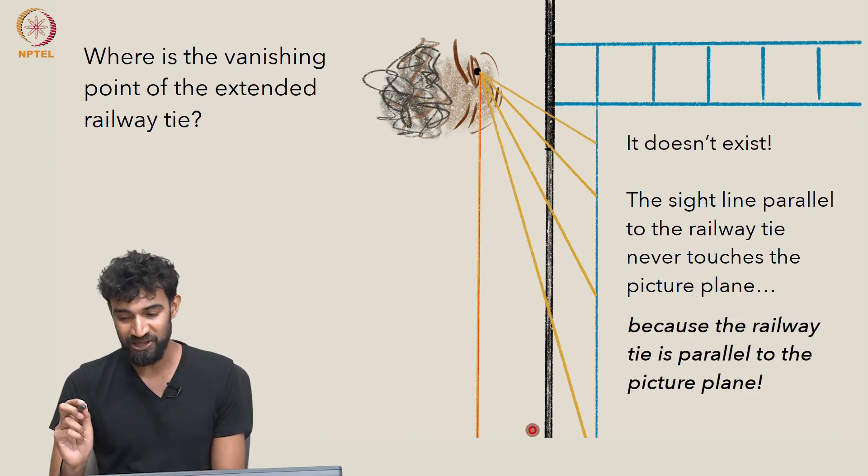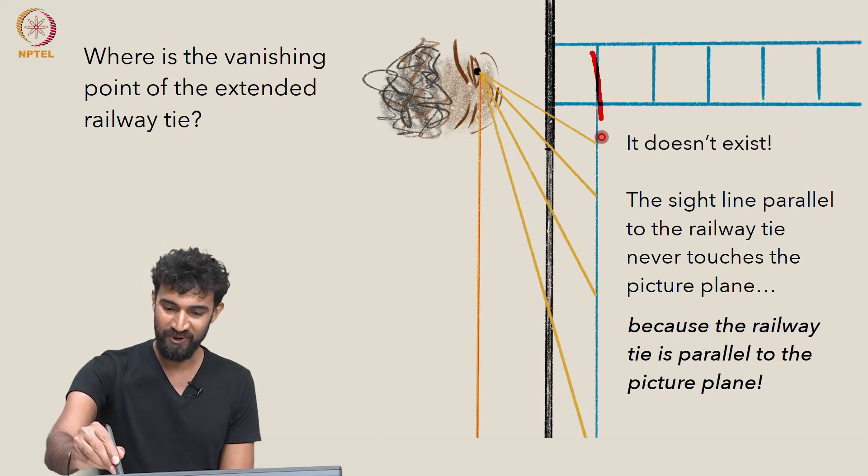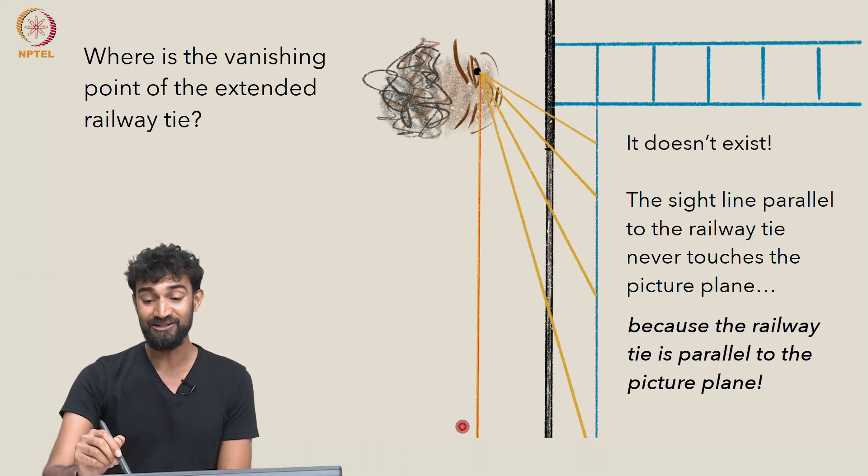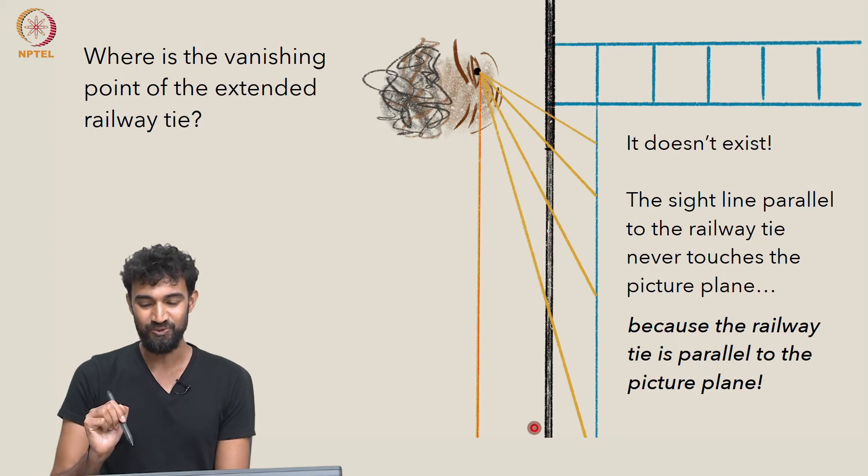And the reason it's parallel to the picture plane is because the railway tie is parallel to the picture plane. And our sight line is parallel to the railway tie. So our sight line will therefore be parallel to the picture plane.